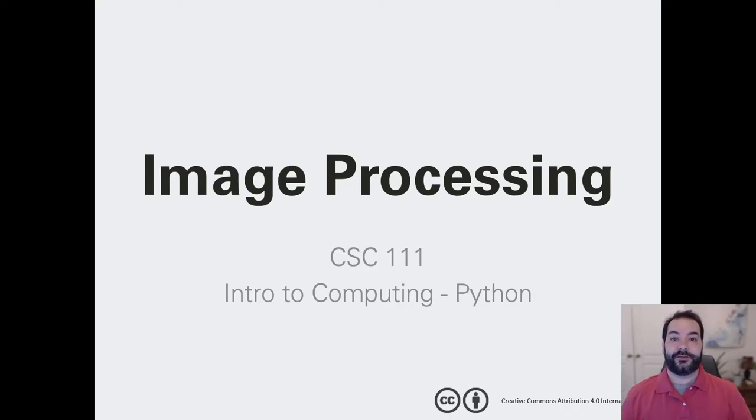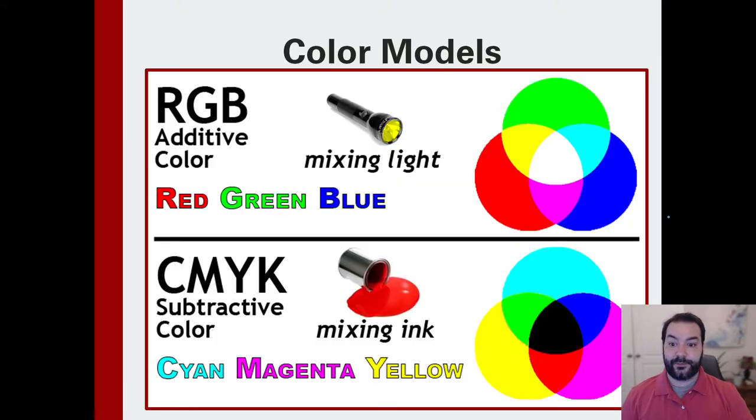One of my favorite ways to demonstrate the use of nested lists is through the application of image processing. The way to think about image processing, especially when we're dealing with colors, is mixing of colors. This is where we first have to do a little bit of terminology because we're very used to paint.